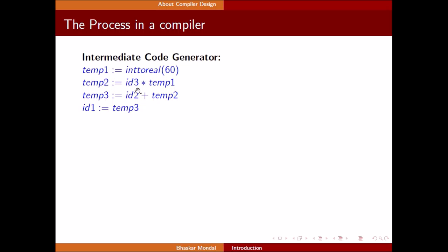If everything is okay, it goes for intermediate code generation. Here, intermediate code generation takes a temporary variable temp1 equals int to real - it converts 60 to real and stores in temp1. Then temp2, another temporary variable, equals ID2 plus temp2. Finally, ID1 equals temp3, so ID1 gets the result.